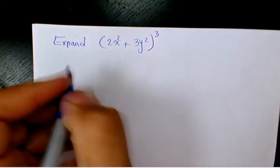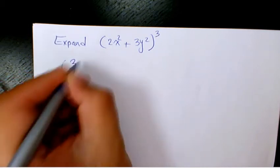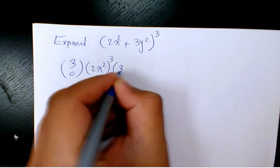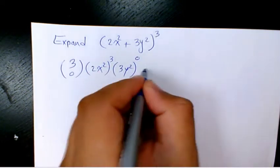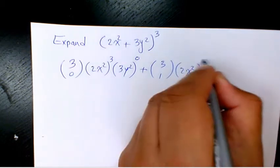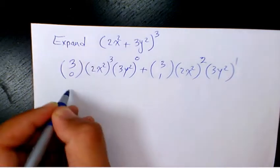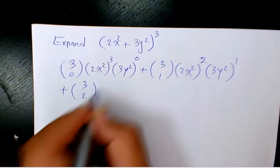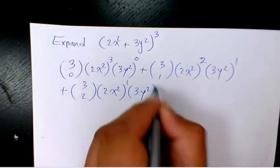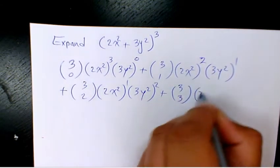What we need to do is write the expansion as: 3 choose 0 times (2x²)³ times (3y²)⁰, plus 3 choose 1 times (2x²)² times (3y²)¹, plus 3 choose 2 times (2x²)¹ times (3y²)², and finally 3 choose 3 times (2x²)⁰ times (3y²)³.